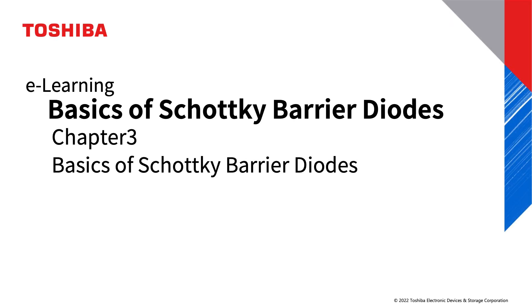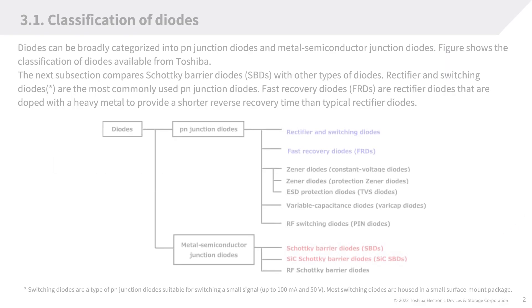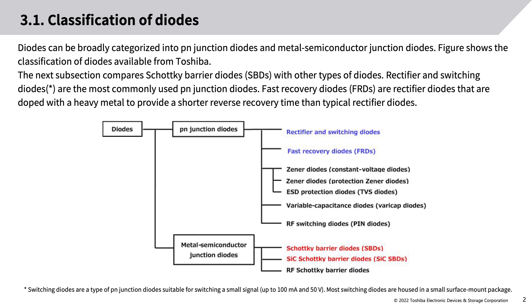Toshiba Device and Storage Corporation eLearning: Basics of Schottky Barrier Diodes, Chapter 3. Diodes can be broadly categorized into PN Junction Diodes and Metal Semiconductor Junction Diodes. This section covers the classification of diodes available from Toshiba and compares Schottky Barrier Diodes (SBDs) with other types.